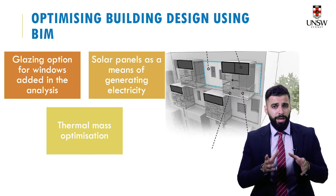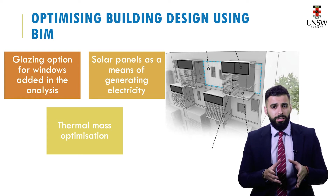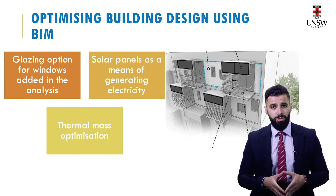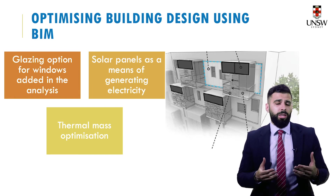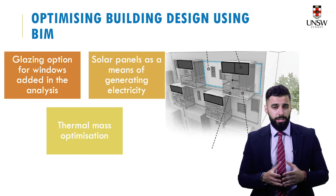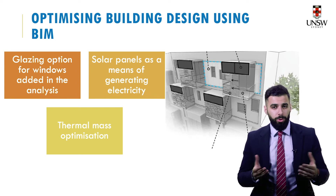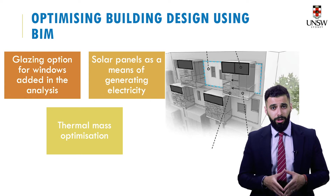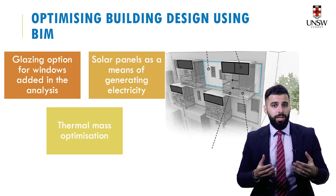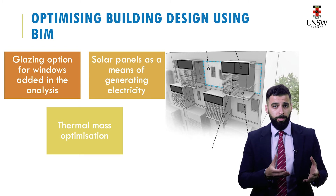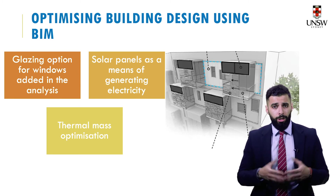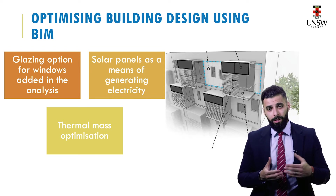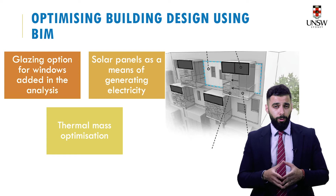Let's now have a look at a common application of 6D BIM. You can implement 6D BIM to optimize the design of your buildings, ensuring that you make use of natural energy sources to run your building. BIM can help you achieve this by allowing you to assess the impacts of glazing options chosen for your windows. You can also use BIM to simulate a solar analysis and identify the surfaces that will receive the highest level of solar energy, which you can then use for placing solar panels to generate electricity.